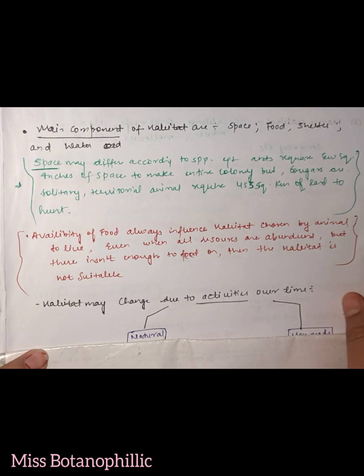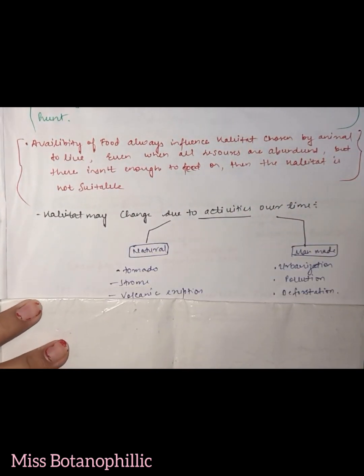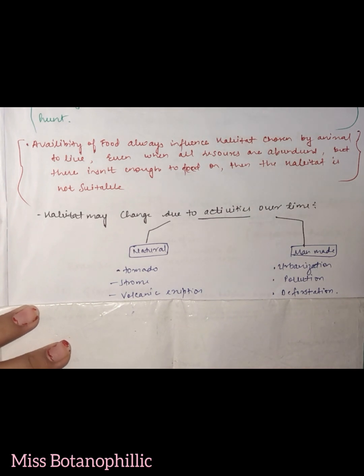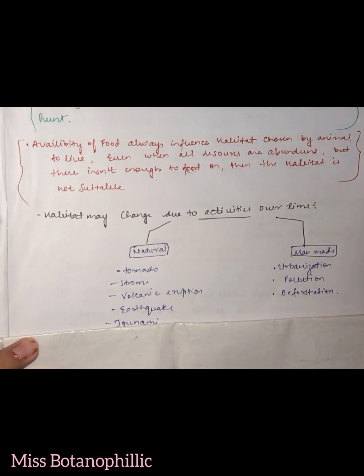Now after this, habitat may change due to activities over time. This habitat can change according to our activities over time, which you must have seen in day-to-day life. If in your garden an ant hill is formed, then you think that your garden is getting spoiled, so you destroy it. So you have seen that an organism's habitat can be destroyed.